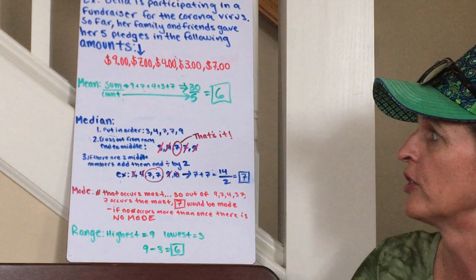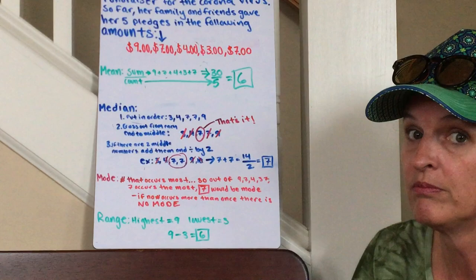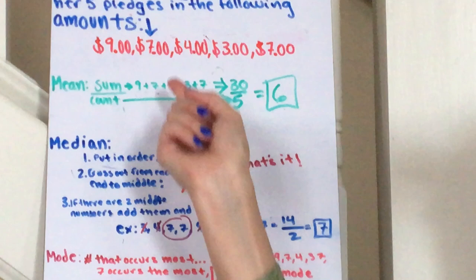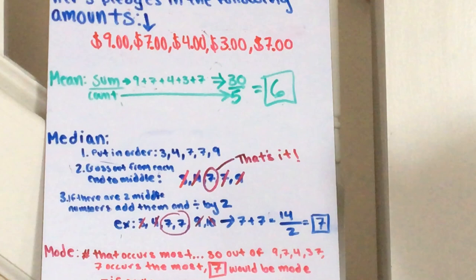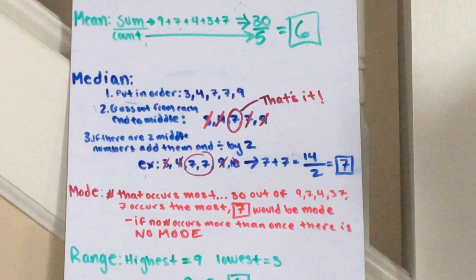First of all, we're gonna find the mean. What do we do? Add them all up. Sum is 30. Divide by how many there are, five. Sum divided by count. 30 divided by 5 equals 6.